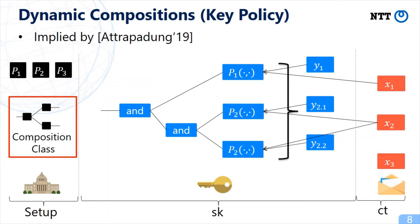Unbounded composition, which is used in the title of this paper, means that the number of inputs for the policy is not bounded at the setup.